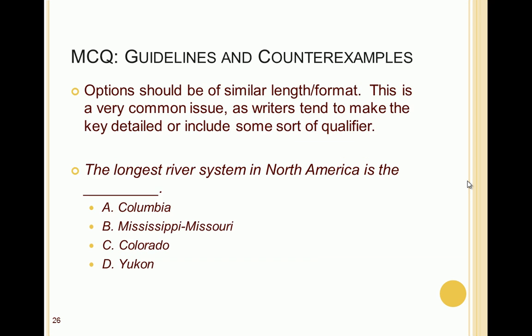Options should also be of similar length or format. Item writers often make the key more detailed than the incorrect answers, or include a qualifier that makes it a little longer and makes it stand out. For example, 'The longest river system in North America is the ___: Columbia, Mississippi-Missouri, Missouri, Colorado, or Yukon.' Option B stands out because it's the only one hyphenated with two river names — even someone guessing would be more likely to choose B.